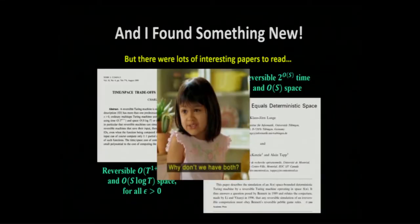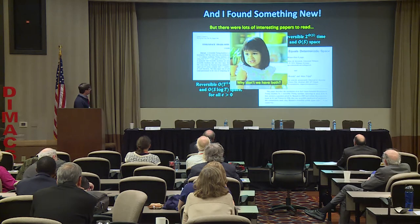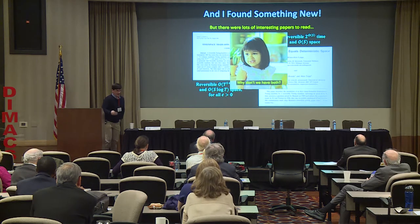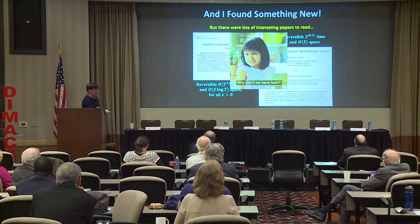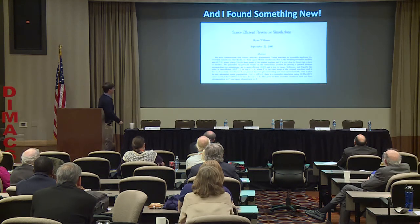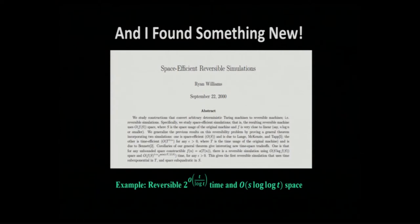My idea was: why can't we have both? Why not combine these two things in some nice way? Charlie Bennett's simulation has a special recursive structure with a base case algorithm doing a simple simulation. If we could substitute the Longa-McKenzie-Tapp simulation there, we could get new trade-offs. One example: you can get roughly exponential-in-t-over-log-t time and s times log log t space — subquadratic space and sub-exponential time — a trade-off not previously known.